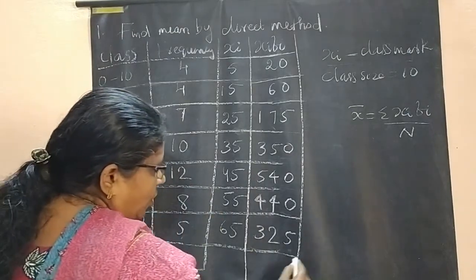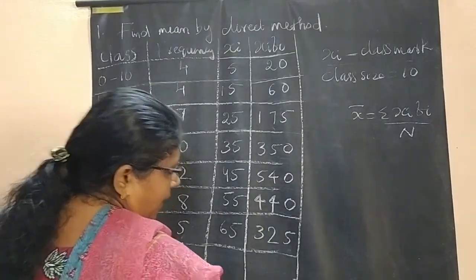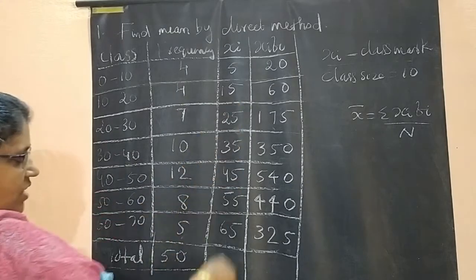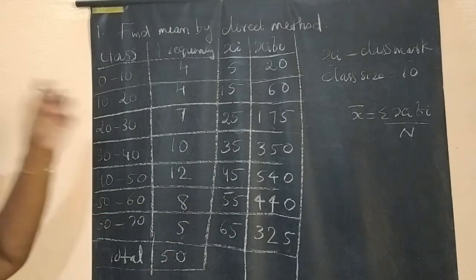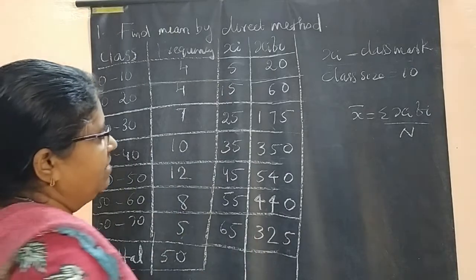Now, we want total of this column. We don't want xi total. We want total of fi and xi·fi.